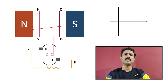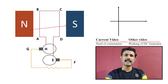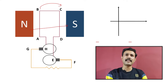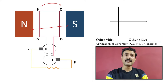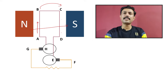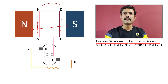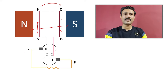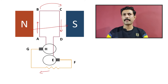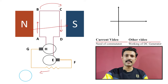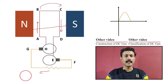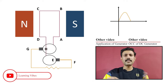We have N pole and S pole, so the magnetic field goes from N to S. Assuming the rotor rotates in a clockwise direction, EMF is induced in the conductors and current starts flowing. The direction of current will be from A to B, and using the same principle, the direction in the other conductor will be C to D. Current flows from G to H through the load in a positive direction, giving us a positive voltage waveform.